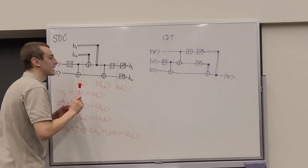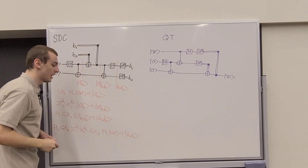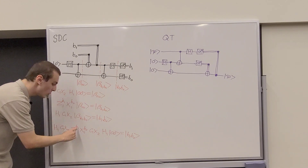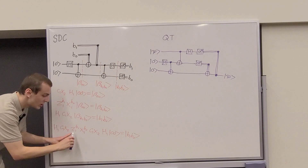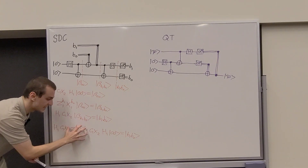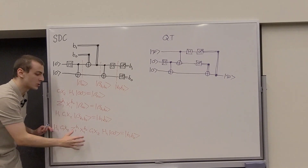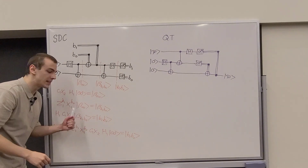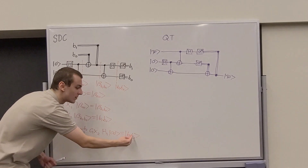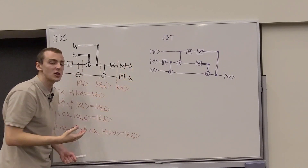Let's examine the four cases Alice could encode. Case b1=0, b0=0: both exponents are zero, so neither operator is applied — this is effectively the identity. The identity acting on the state does not change it, so we remain in state |0,0⟩, corresponding to measurement outcomes 0 and 0.